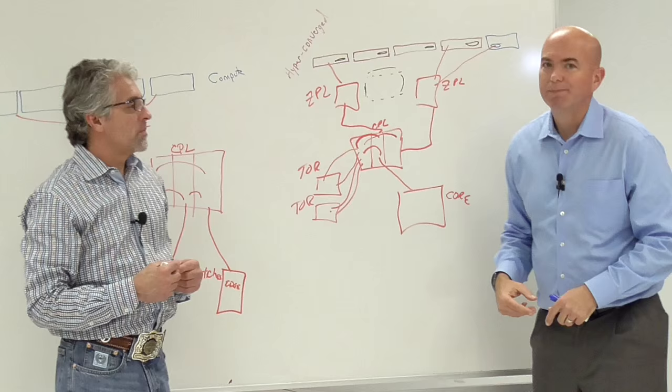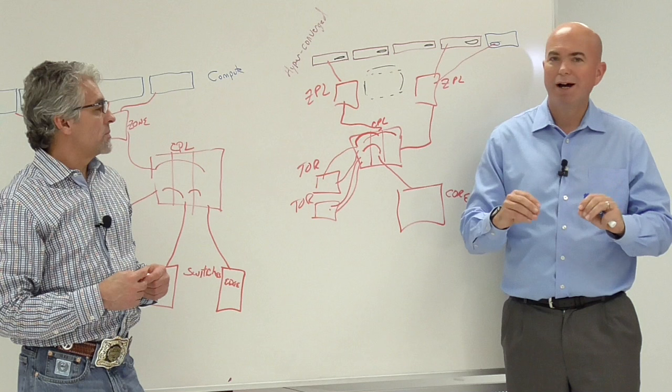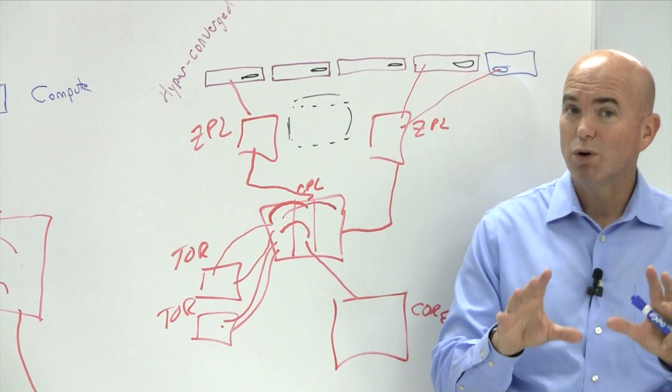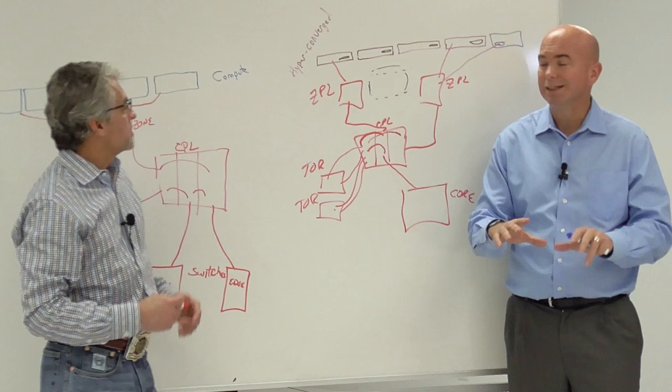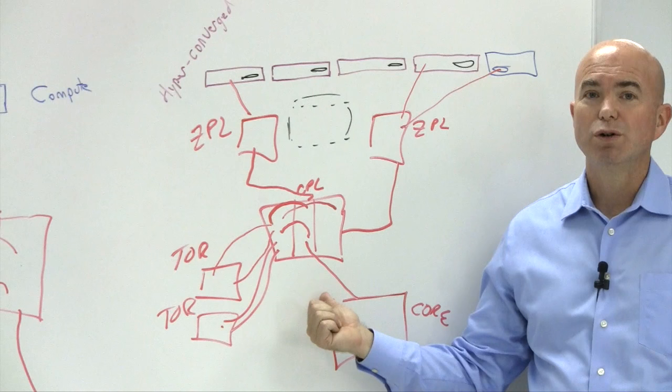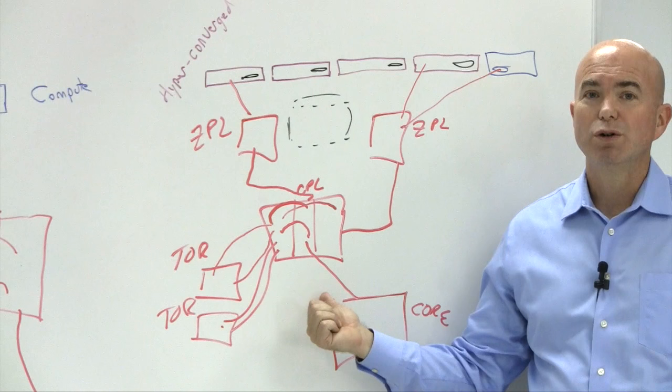So there you have it. If you're looking at a hyperconverged architecture, we talk about how it collapses storage, networking, and compute. And it certainly does storage and compute, but networking remains critical as you can see right here. And if you don't have a really good solid plan, adding nodes and taking advantage of all the flexibility that we talk about in hyperconverged goes right out the window.